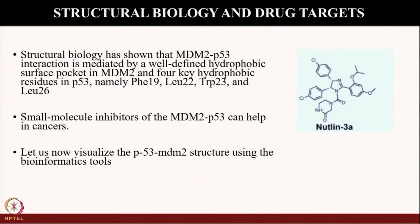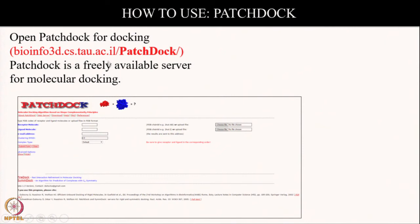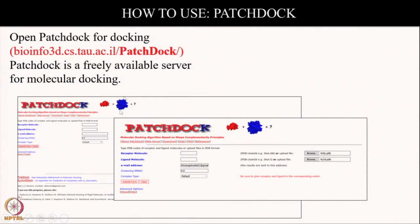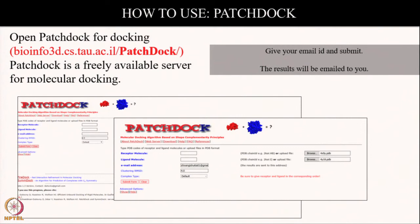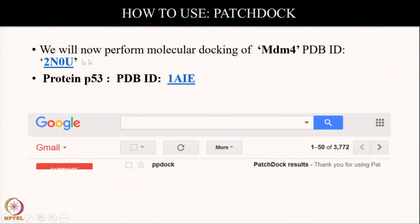Patchdock is an open source software freely available which can help you in performing molecular docking. In Patchdock we have different tabs — we have to fill up a receptor molecule and fill up the details of the ligand molecule. We have to give the email ID and the results will be directly mailed to you through the Patchdock service system. We have found out the two interacting partners, MDM2 and P53, and also searched for the IDs of these two interacting partners. We will use these two IDs to find out how the molecular interaction is taking place through Patchdock.